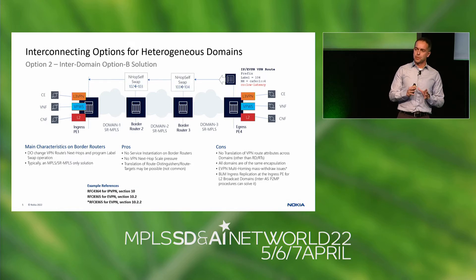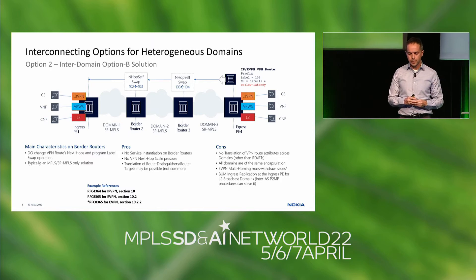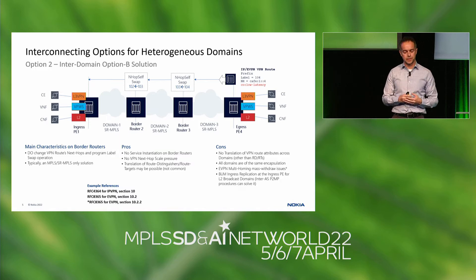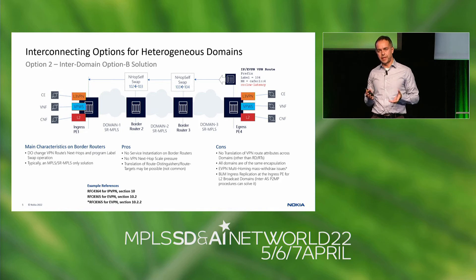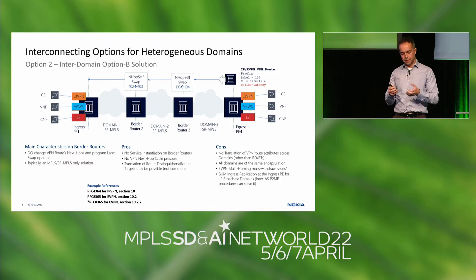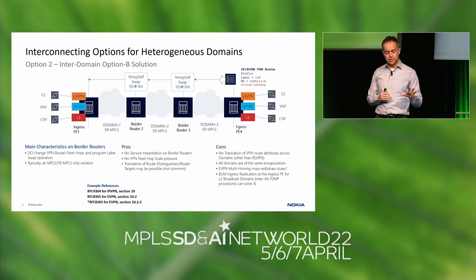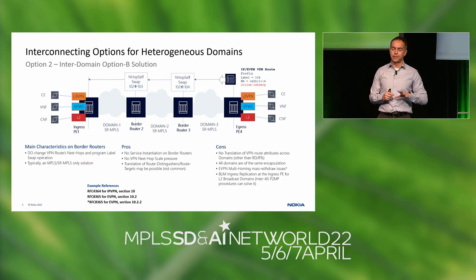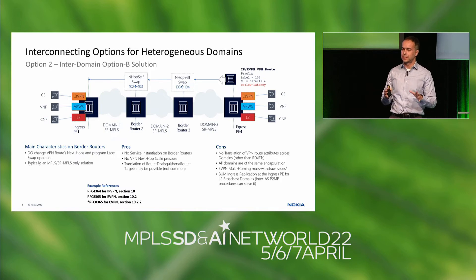The second group is what we call the inter-domain option B solution, inspired by RFC 4364 section 10, the inter-AS model B, later described for EVPN in RFC 8365 section 10.2. In this solution, the border routers have VPN state — they receive the IPVPN or EVPN routes, program a label swap operation, and readvertise the route with a different label and next hop. This solution is typically supported for MPLS or SR-MPLS only networks. Advantages: no service instantiation on border routers, no VPN next hop scale pressure on the ingress PE, and some translation of route distinguishers and route targets in the border routers is technically possible.